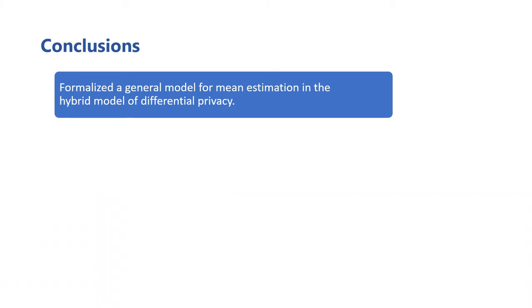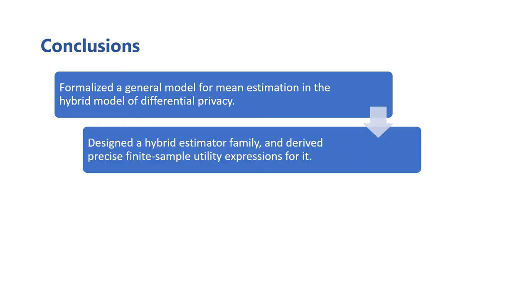We've covered a lot of ground at this point, so to begin to summarize, we formalized a fairly general statistical model for mean estimation within the hybrid model of differential privacy. We designed the family of hybrid estimators for computing the joint mean of both classic trust models' users, and within that family, we were able to derive exact, finite sample utility expressions in order to precisely compare against baseline estimators in either of the classic trust models.